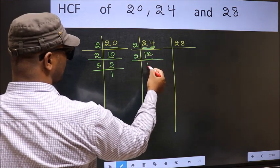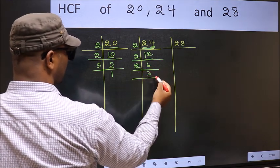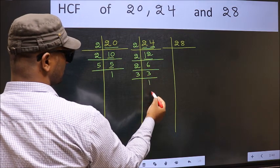12 is 2 times 6. Now 6 is 2 times 3. Now we have 3. 3 is a prime number, so 3 times 1 is 3.